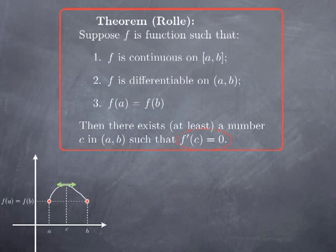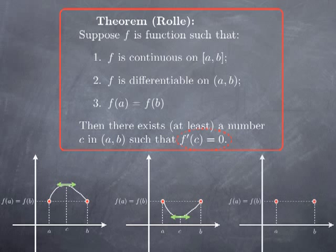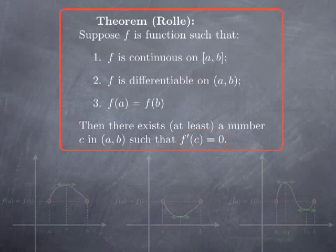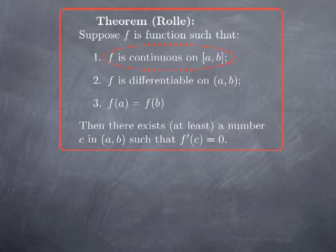We can draw other pictures satisfying these three conditions where we find more than one possibility for the places where there is a horizontal tangent. To recap the three assumptions: the function is continuous on the closed interval, differentiable on the open interval, and takes the same values at the endpoints.